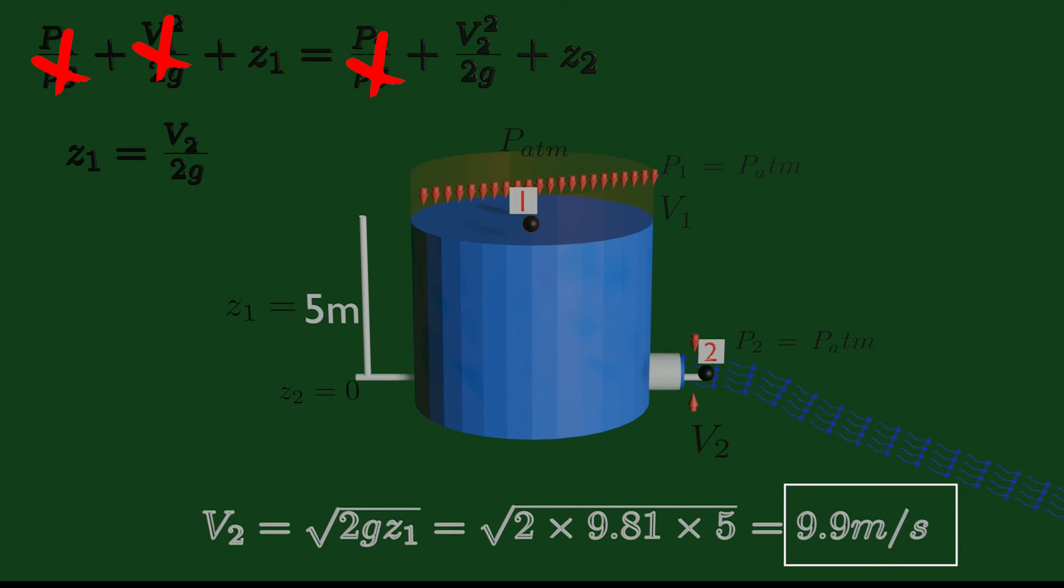Therefore, the water leaves the tank with an initial maximum velocity of 9.9 meters per second. Thank you for learning something new today. Be happy. Bye!